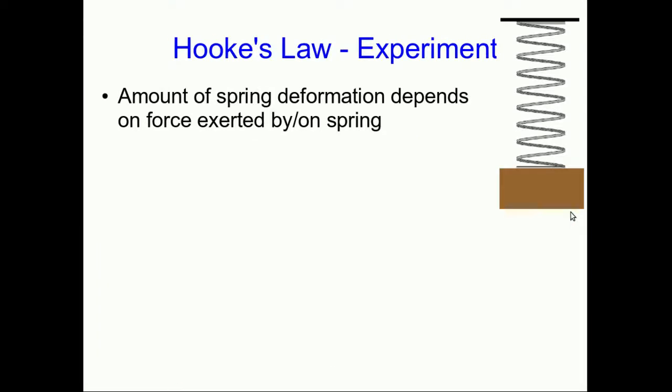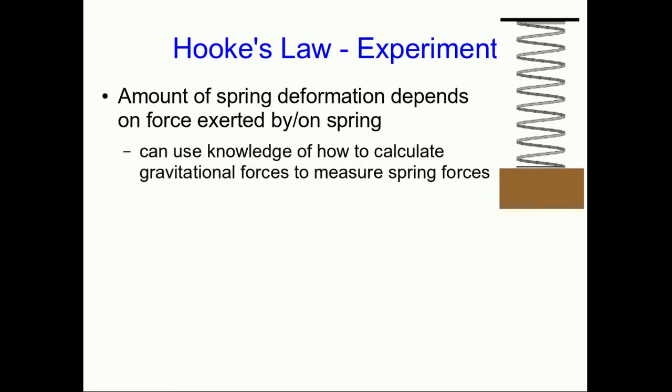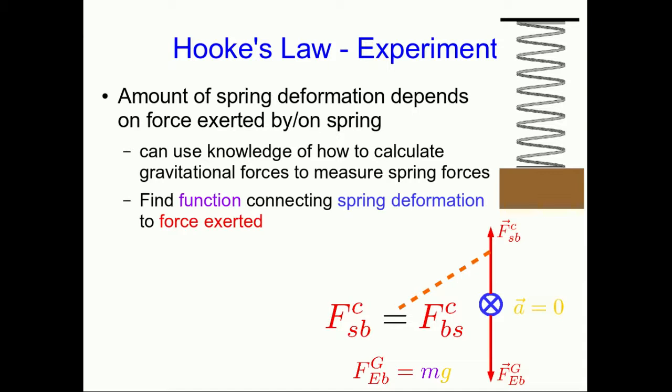So how does the spring deformation depend on the force exerted by the spring? Well, now that we know how to calculate gravitational forces from the previous lecture, we can use that to indirectly measure spring forces. If we hang something like a brick off of the end, then we know in equilibrium the upward force exerted by the spring is equal in magnitude to the downward gravitational force. And so now we can do an experiment to find the function connecting the spring deformation to the force exerted.